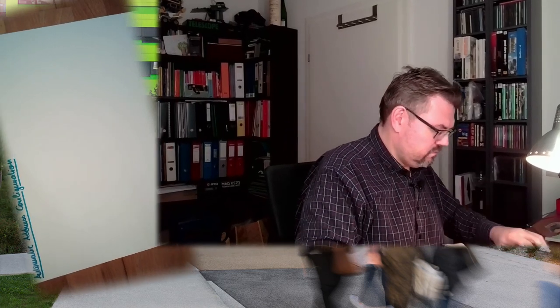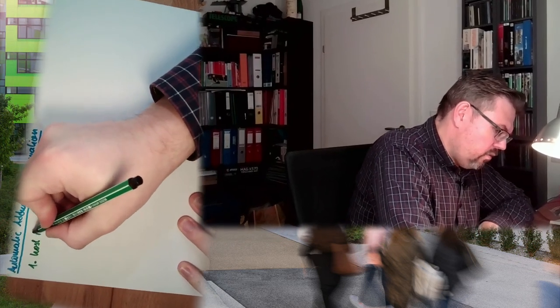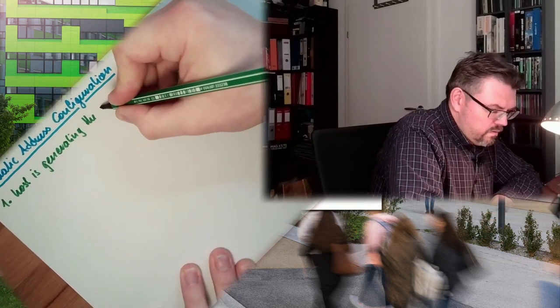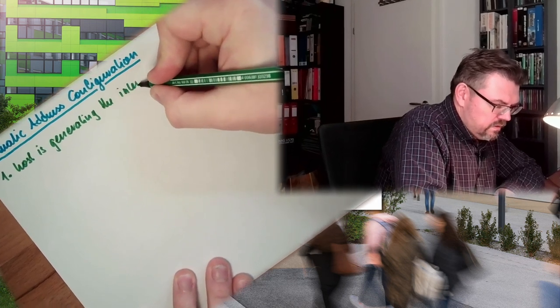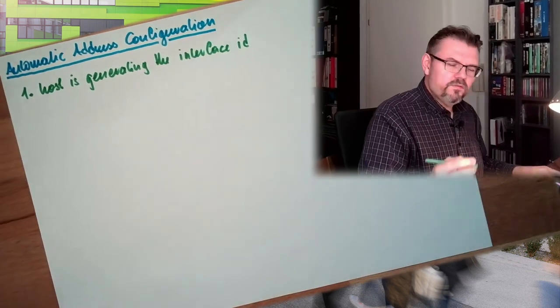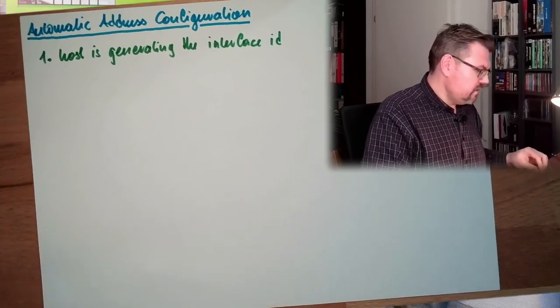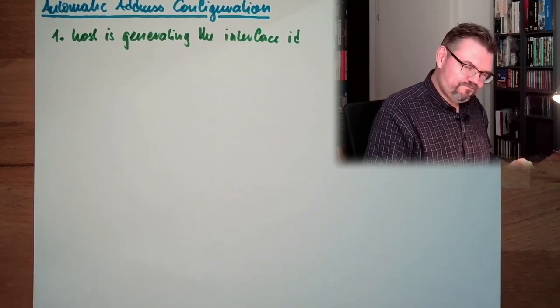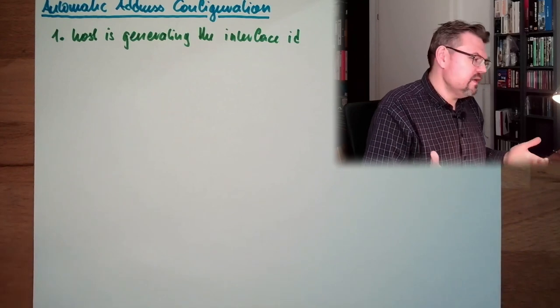So the first thing which is happening, first, the host is generating the interface ID. The interface ID part of the network address, of the IP address. What is done with this? It's only half of it.